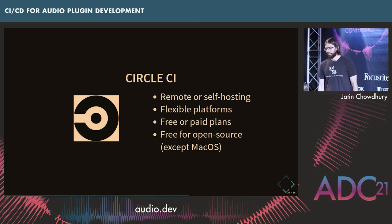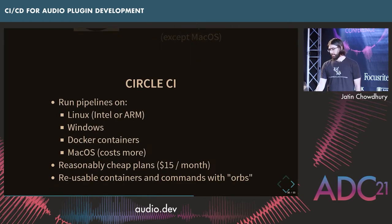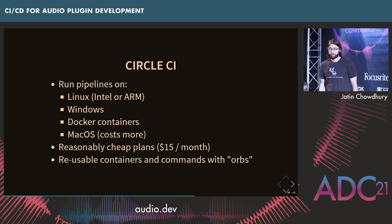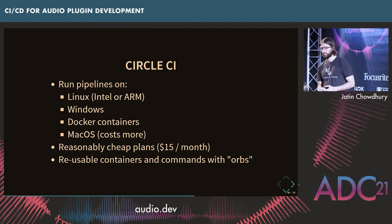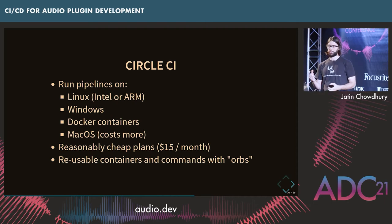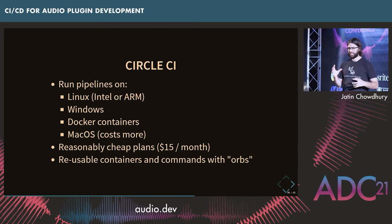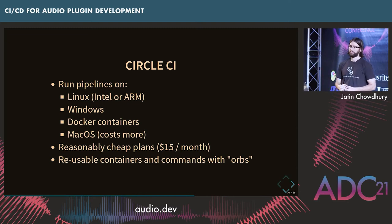CircleCI is also a great option with many of the same services. One nice advantage is that they support a lot of different platforms — for Linux jobs you can actually run on an ARM machine, which is very nice if you need to test on ARM hardware. They also support Docker containers. Their pricing is reasonably cheap. And they have these things called orbs — reusable containers and sets of commands you can reuse — which makes your life easier setting up a pipeline, since you don't need to repeat things you use more than once.